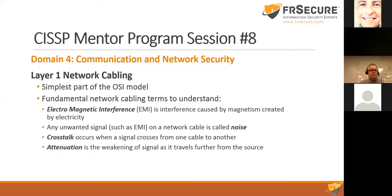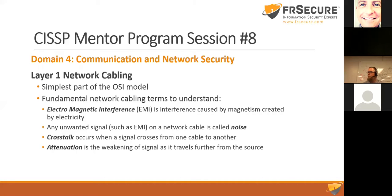Layer one is the physical layer — the simplest part of the OSI model — network cabling. Fundamental terms: EMI is interference caused by magnetism from electricity, typically on copper. There's no EMI in fiber because it uses light pulses, not electricity. Any unwanted signals such as EMI on a network cable is called noise. Crosstalk happens when two signals cross from one cable to another. Attenuation is the weakening of signal as it travels further in distance.